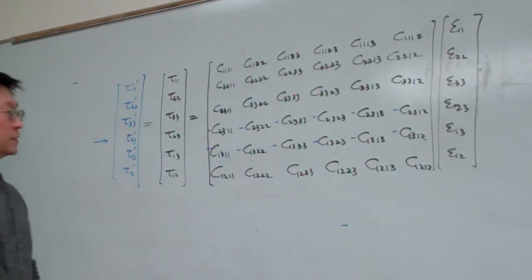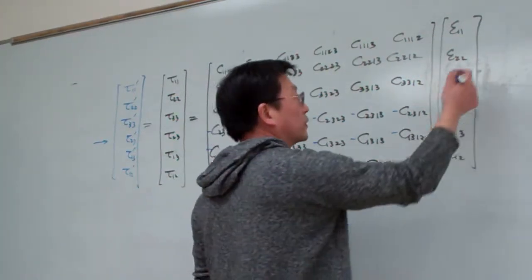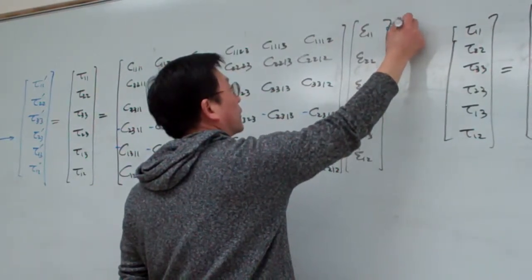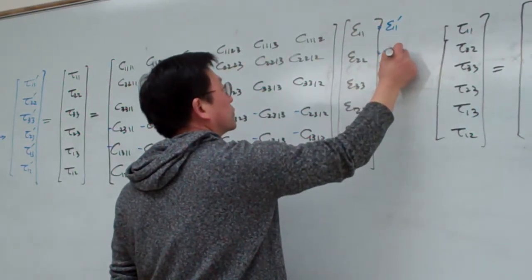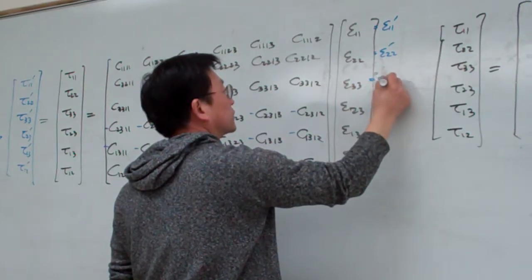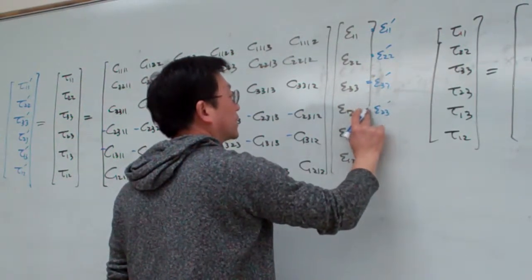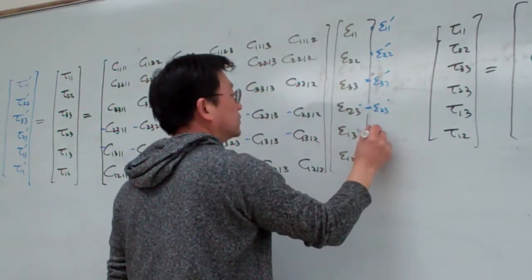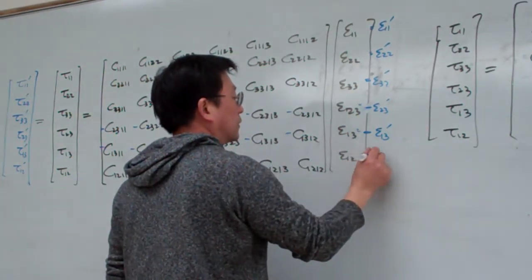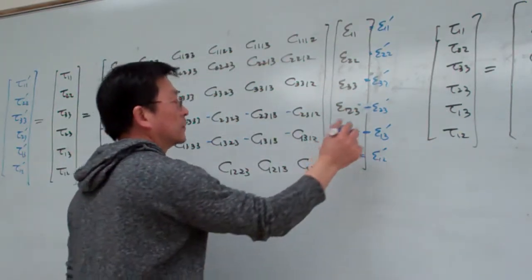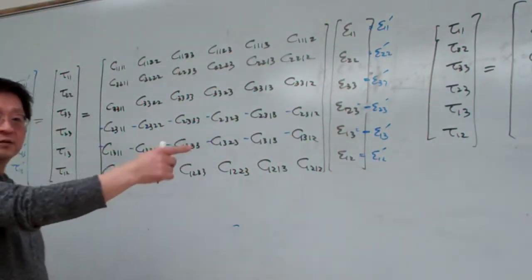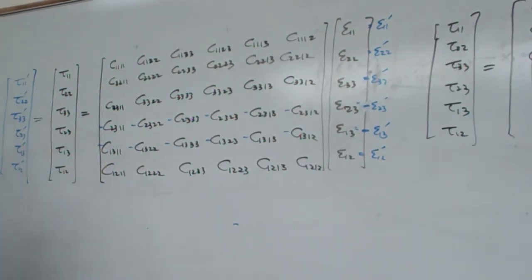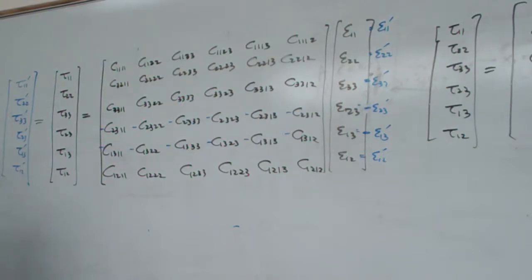On the other side, for the strain, the same thing: we have the strain basically equal to epsilon 1-1 prime, this is equal to 2-2 prime, this is 3-3 prime, this is 2-3 prime minus, minus 1-3 prime, 1-3 prime, 1-2 prime. So again here, I want to have the minus sign get into the coefficient here. The same thing, we can try.